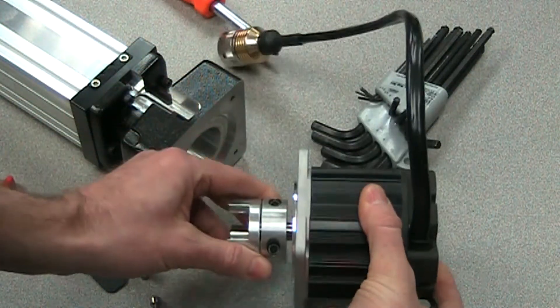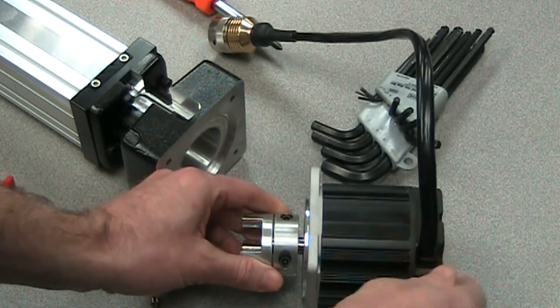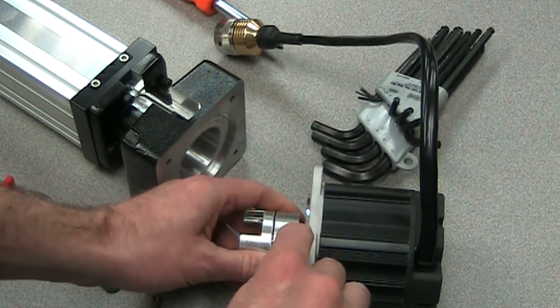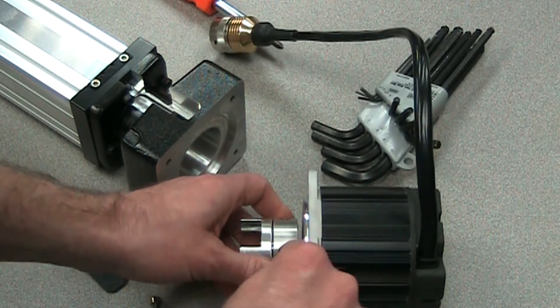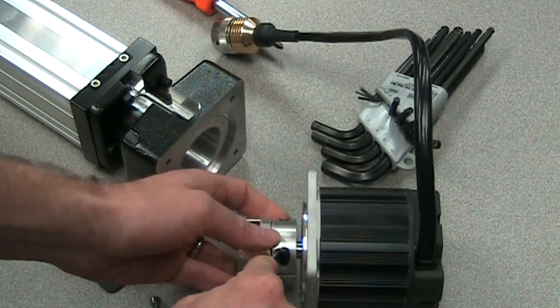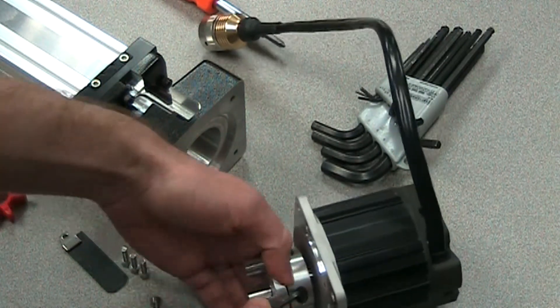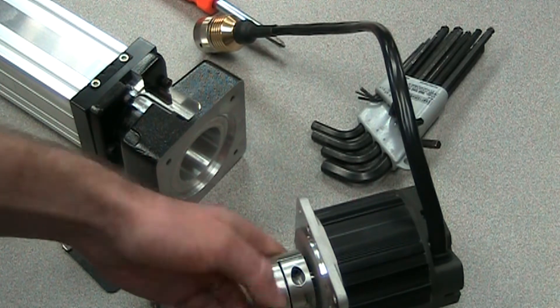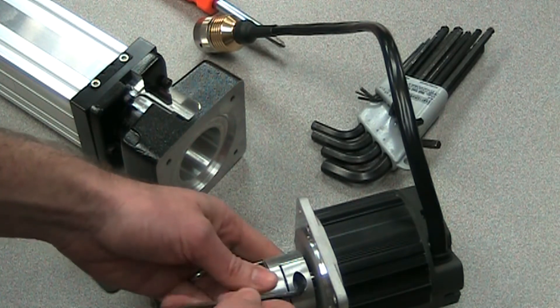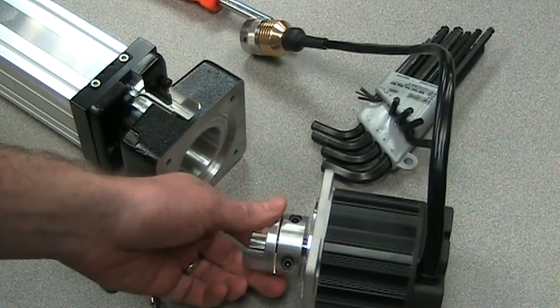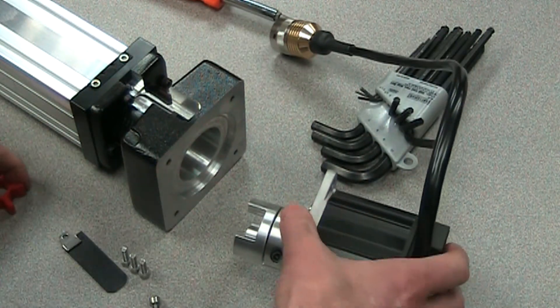Once that's complete, we'll want to tighten this to the torque specs required for the coupler half. And you can obtain those values from either the Tolematic technical support folks or through the documentation that we have for mounting these motors on our website. So we'll tighten those down to the torque spec.